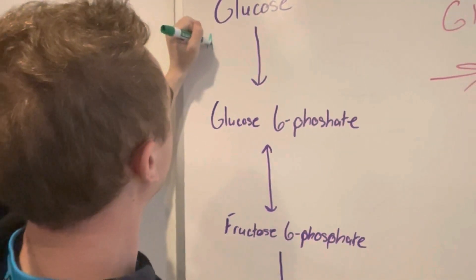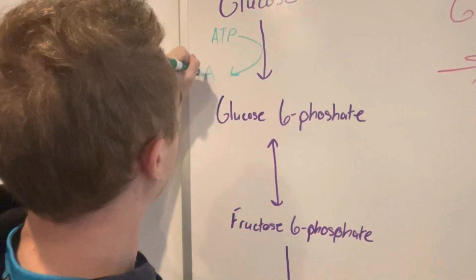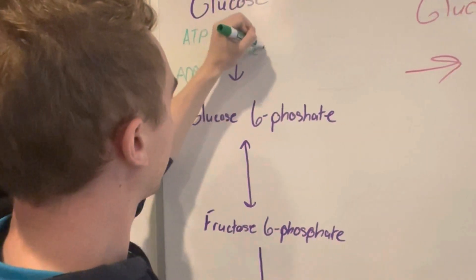The first reaction between glucose and glucose-6-phosphate is going to involve the transfer of ATP to ADP, and this is catalyzed by the enzyme hexokinase.